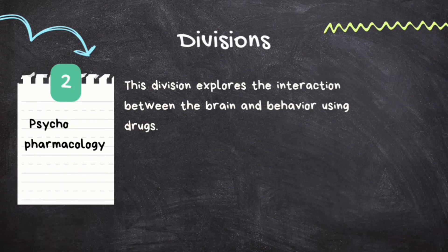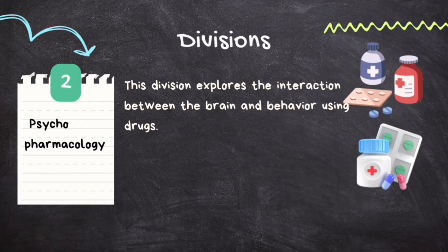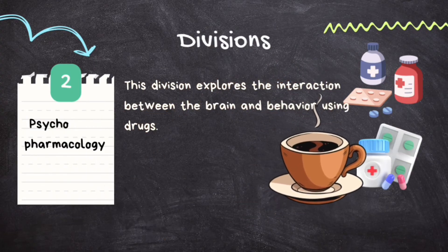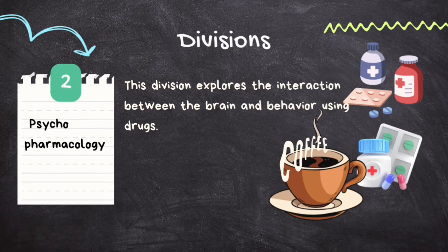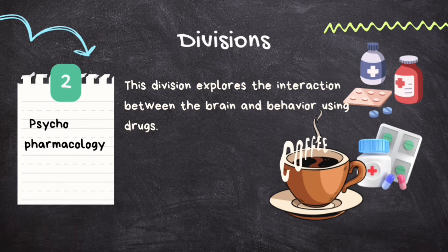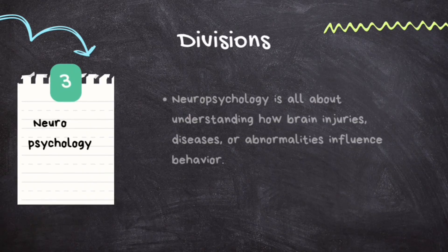The next division is psychopharmacology. This division explores the interaction between brain and behavior using drugs. It analyzes the impact of different drugs on mental health and considers how different compounds alter behavior by changing the way a person thinks or feels. For example, coffee contains caffeine, a stimulant. When you drink coffee, caffeine enters your bloodstream and eventually reaches your brain, influencing neurotransmitters and impacting your behavior. Psychopharmacologists study these drug-brain interactions to understand how substances affect mood, thoughts, and actions, and they play a crucial role in developing medications to treat mental health issues like depression and anxiety.